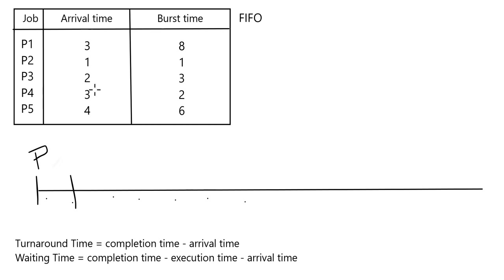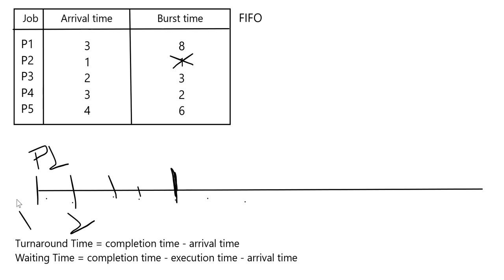P2 is allotted the CPU for 1 unit of time, from time 1 to 2. At time unit 2, process 3 arrives — processes 1, 4, and 5 have not yet arrived — so P3 takes the CPU. P2 has finished its execution. P3 starts at time unit 2 with a burst time of 3, so it runs until time unit 5. At time unit 3, processes 1 and 4 arrive while P3 is still executing.